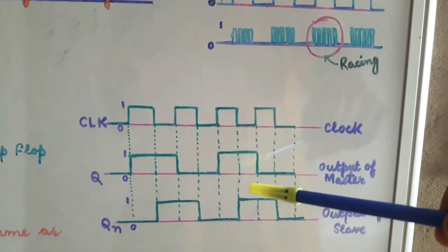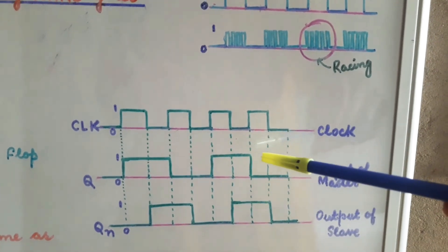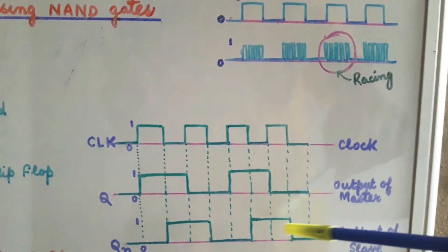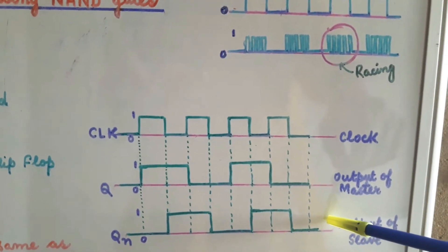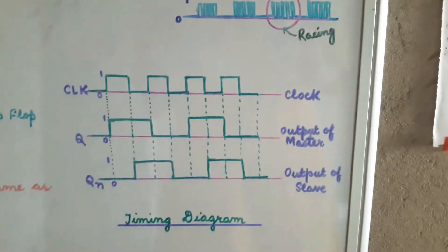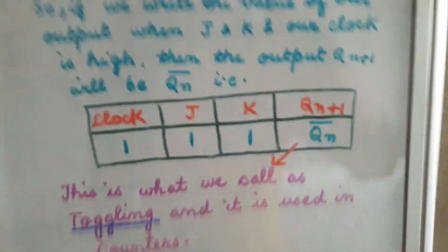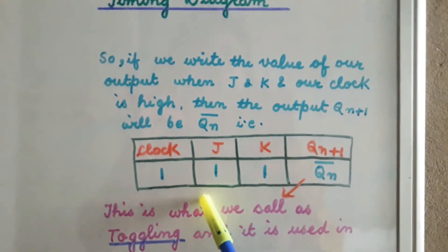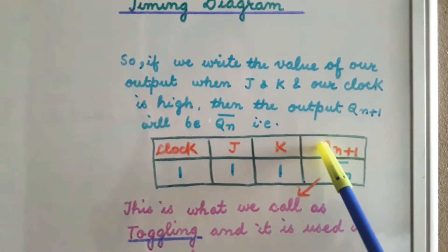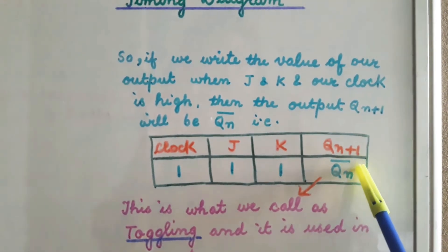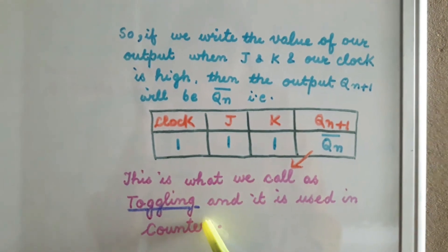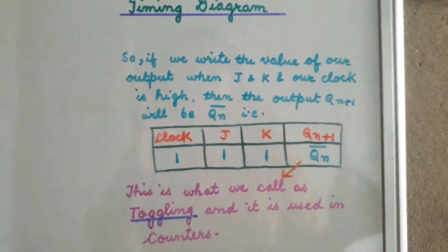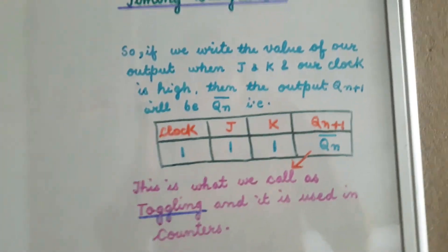We have eliminated the problem of racing — the output is not changing continuously from 0 to 1, but is changing only once in a clock cycle. This is what we call toggling. When the clock is 1, J is 1, and K is 1, the output will be Qn-bar. This is what we call toggling and it is used in counters.